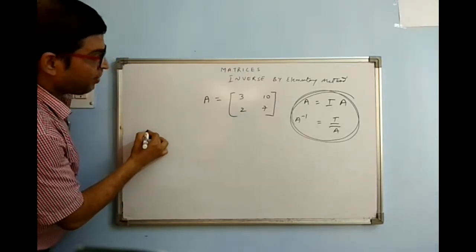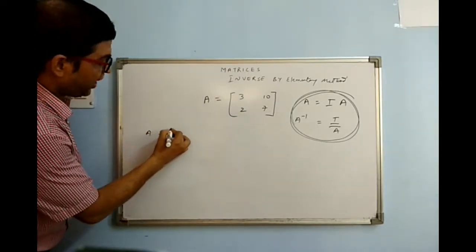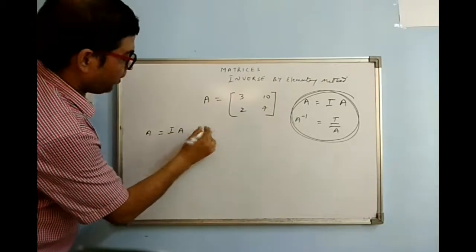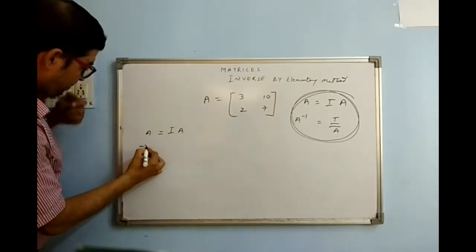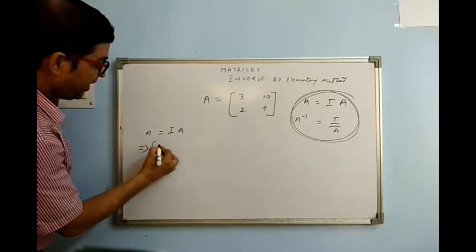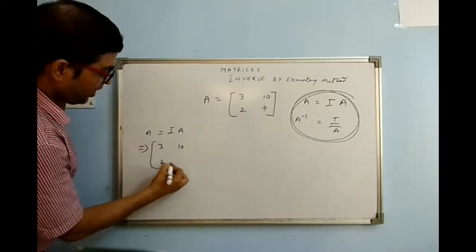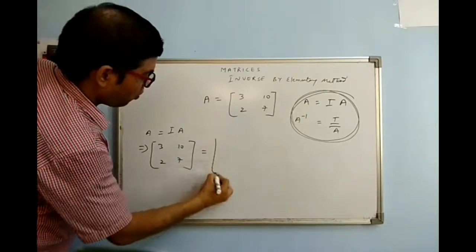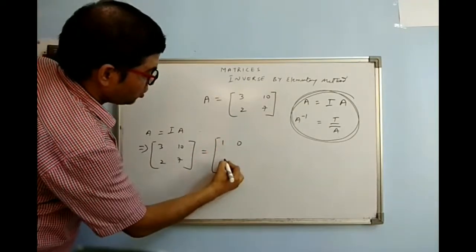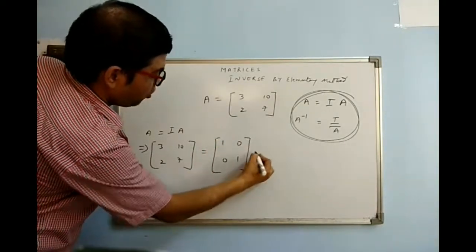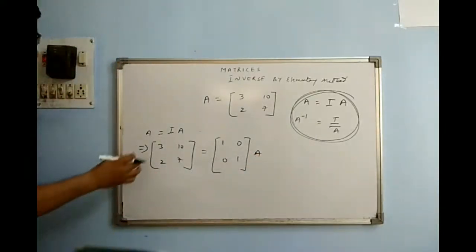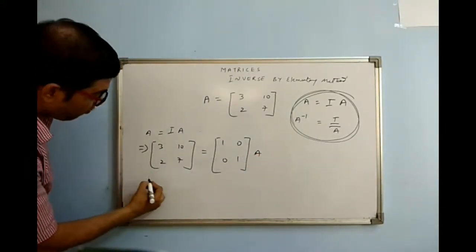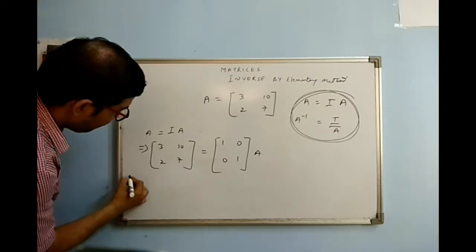So if I am writing A = I·A, it is coming out to be [3, 10; 2, 7] = [1, 0; 0, 1]·A. Firstly, I have to bring a 1 here in the top-left position.